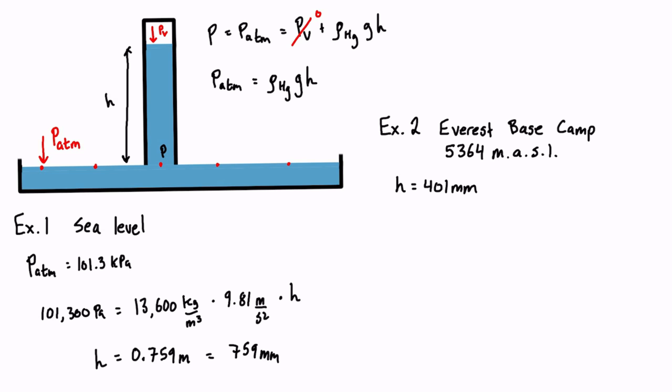So we would use the same formula, we would just have P atmosphere is equal to all the same stuff, rho, G, H, rho being the density of mercury. And we are looking for atmospheric pressure. So we just got to plug in everything that we have. So it's 13.6 times 10 to the 3 kilograms per meter cubed, times acceleration due to gravity, times the height in meters, which is 0.401 meters, that is 401 millimeters.